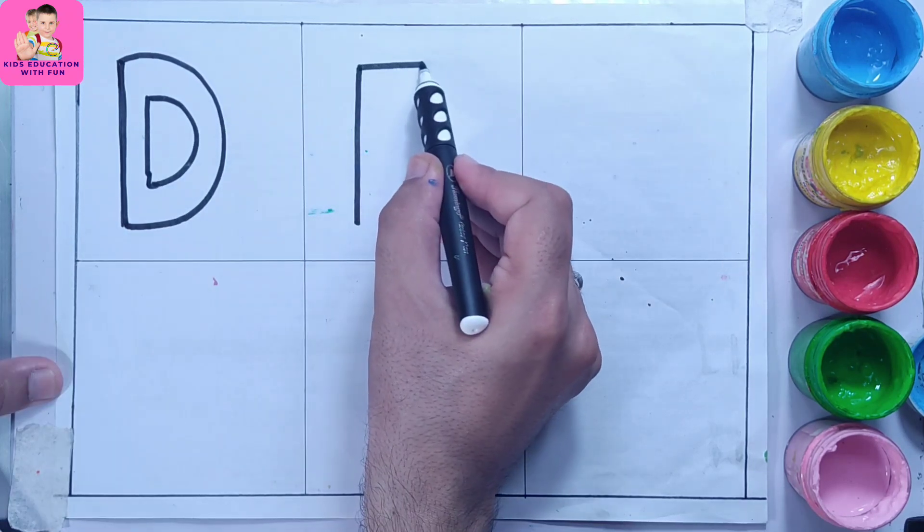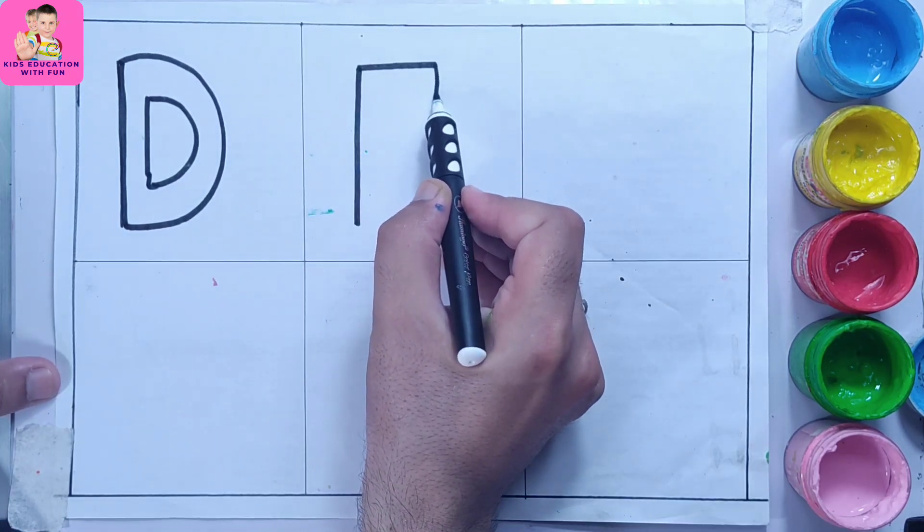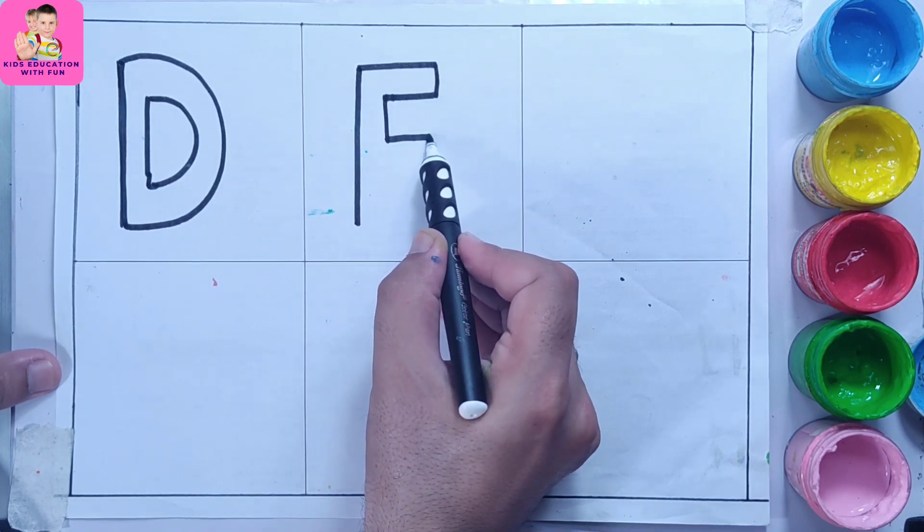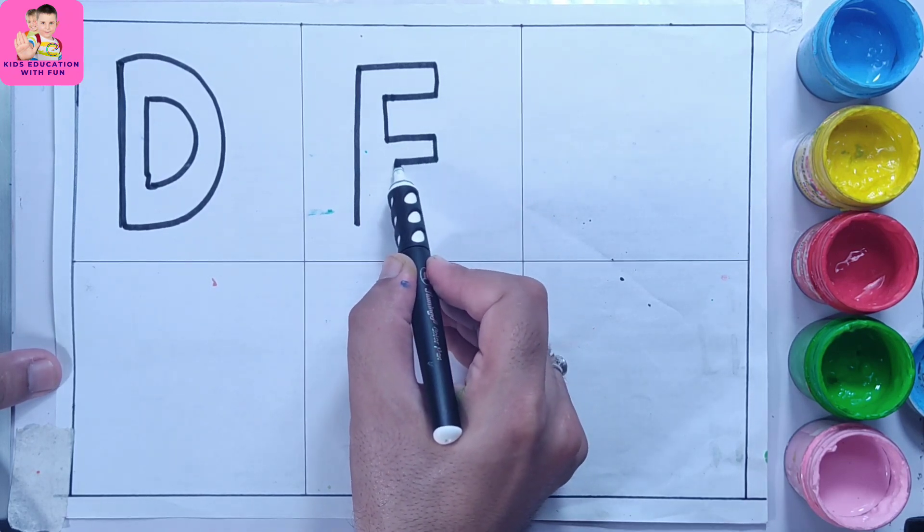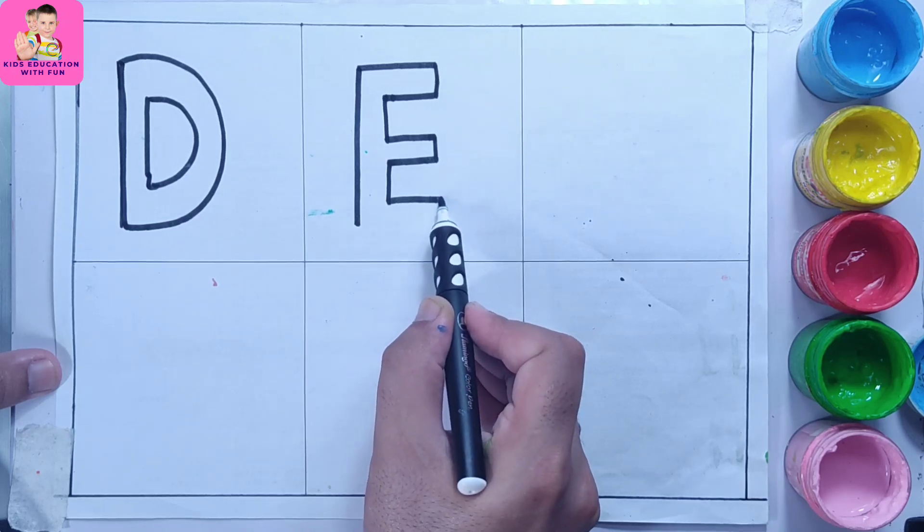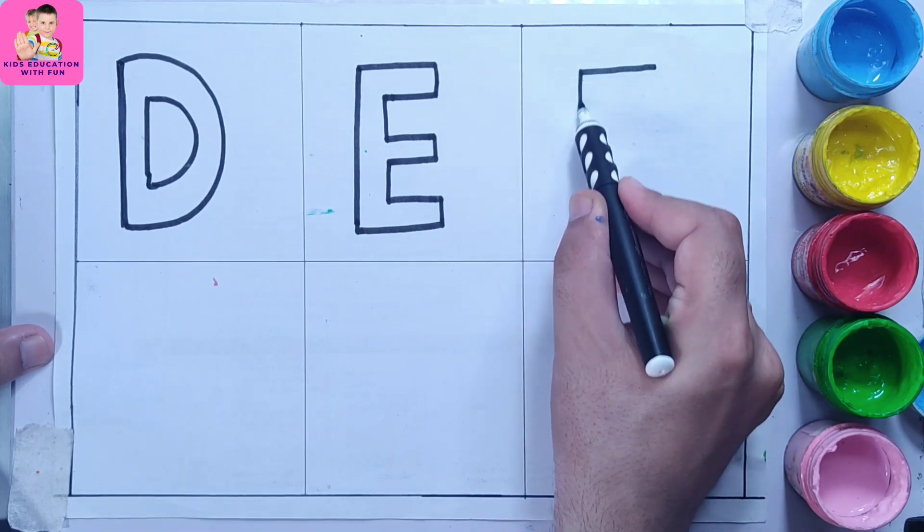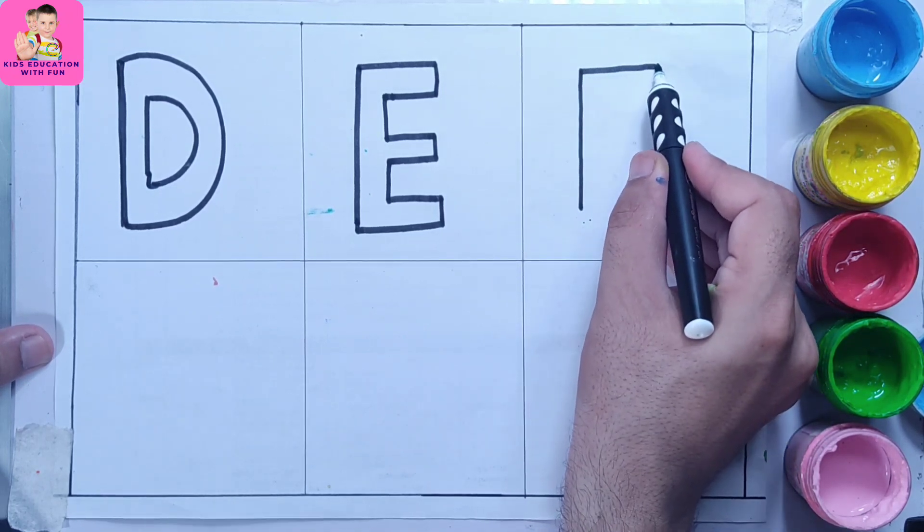Letter E. So this is letter E. You can practice it. Super easy, you can do that.